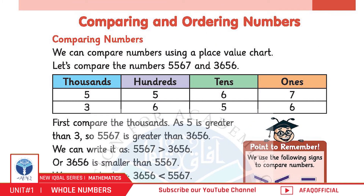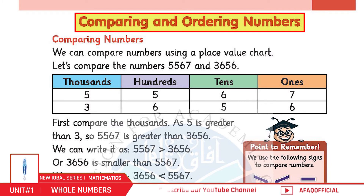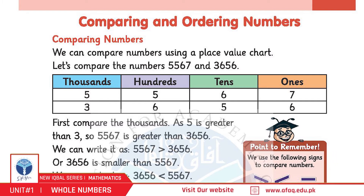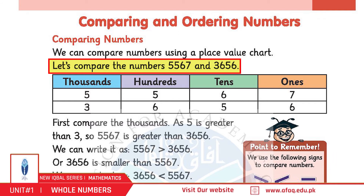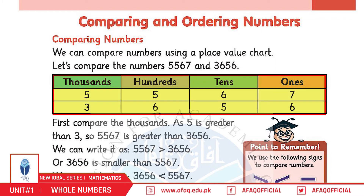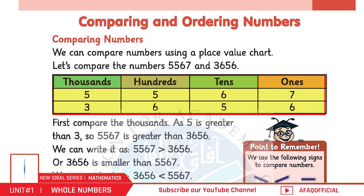हमारा अगला topic है Comparing and Ordering Numbers। Comparing Numbers: बच्चो, हम numbers को compare करने के लिए place value chart का इस्तिमाल कर सकते हैं। जैसे 5567 और 3656 को compare करें — दोनों numbers को place value chart में लिखें। Thousands में चेक करें: 5000, 3000 से बड़ा है।